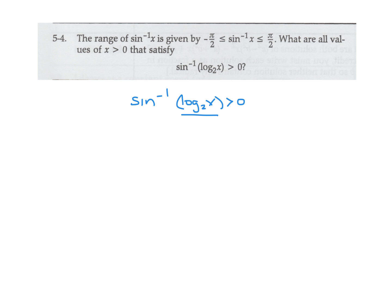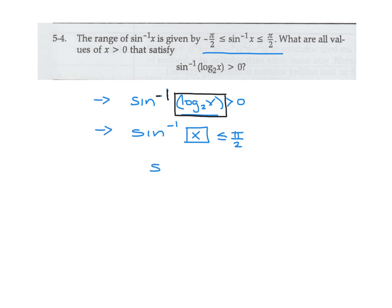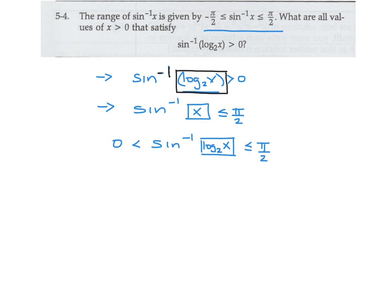The inverse sine of something is greater than 0, and the given range tells me that the inverse sine of x is less than pi over 2. So these two things give me a range: the inverse sine of log base 2 of x is between 0 and pi over 2. That gives me parameters before I solve the question.